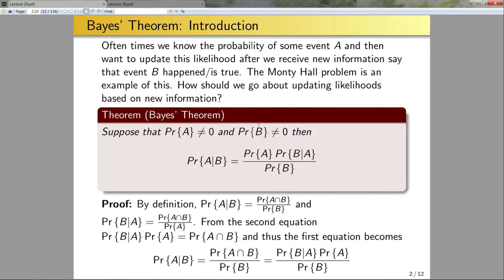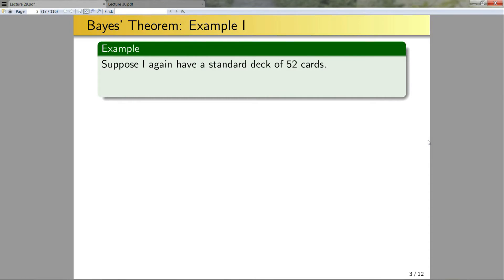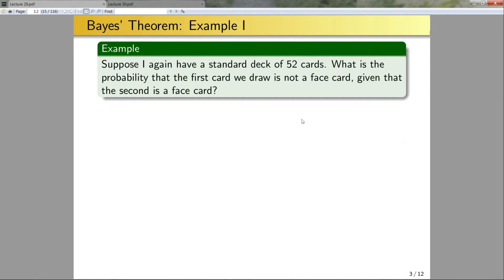Okay, so let's look at a few examples of applying Bayes' theorem. We're going to start with contrived examples where you don't necessarily need Bayes' theorem. As we go further we will get to cases where Bayes' theorem makes things more convenient, and finally the cases where you actually do need to use Bayes' theorem. Suppose I have a standard deck of 52 cards. What is the probability that the first card we draw is not a face card given that the second card is a face card? Previously I examined this problem but swapped the ordering of A given B.